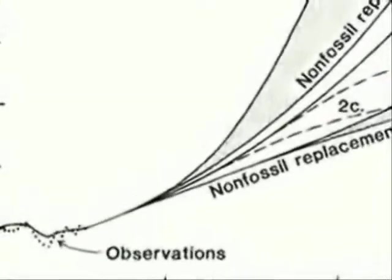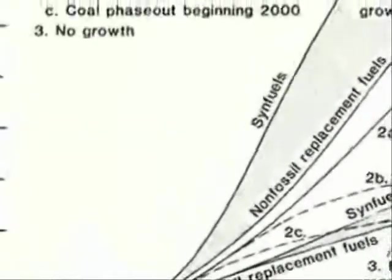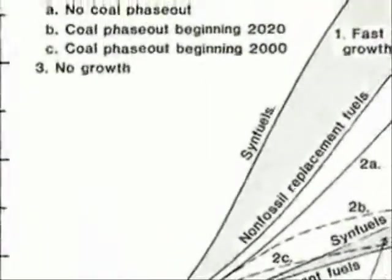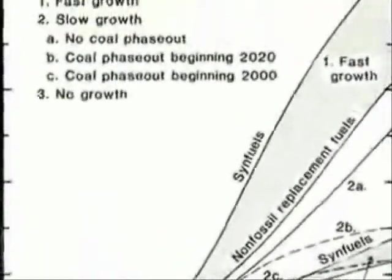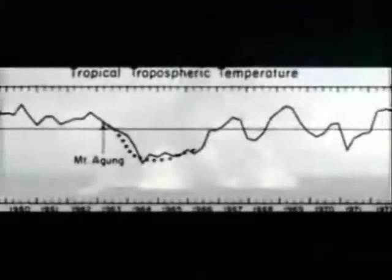Models are powerful tools for understanding Earth's complex systems. To create a model, scientists must first characterize a system by identifying the processes that govern its evolution. In the 1970s, Dr. James Hansen and colleagues at NASA built a simple climate model to simulate how changes in the atmosphere cause Earth's average temperature to change over time.